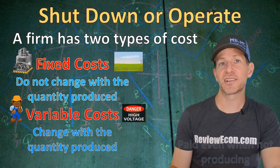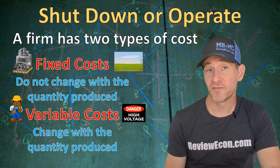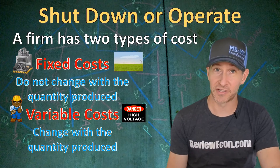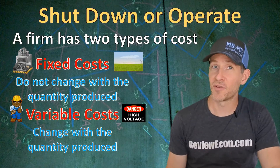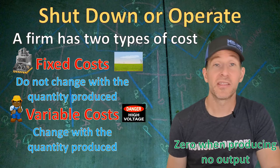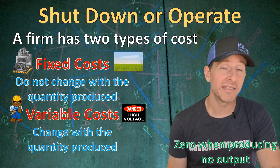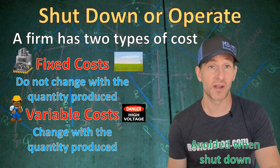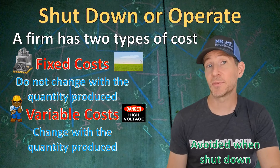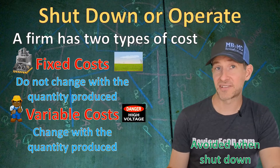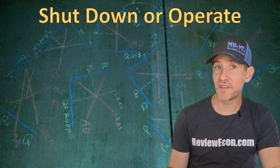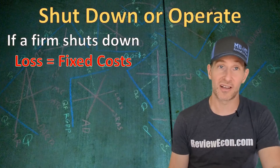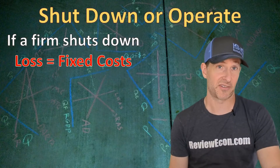The other type of cost we have is variable costs. Variable costs are going to increase as the quantity produced also increases. When a firm is producing zero units of output, the variable costs of production will be zero as well. So if a firm chooses to shut down in the short run, their variable costs will be zero and fixed costs will be all they have to pay. The firm's losses will be equal to their fixed costs of production.